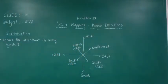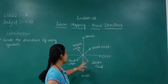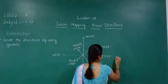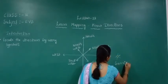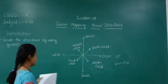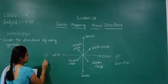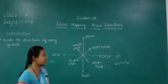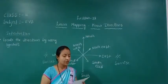Today we will learn about directions. Understanding from east — sun rises in the east, and sun sets in the west. So we can understand sunrise from east and sunset in the west.